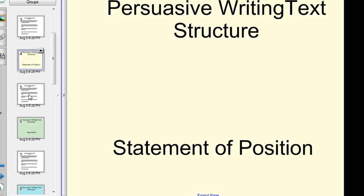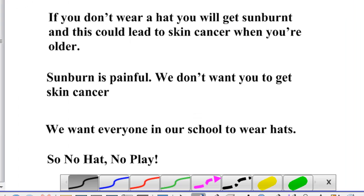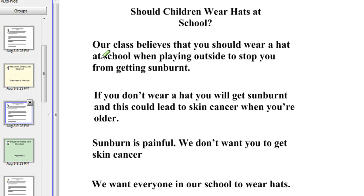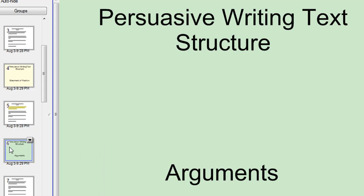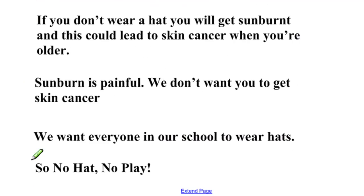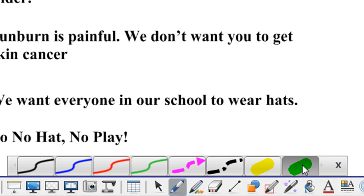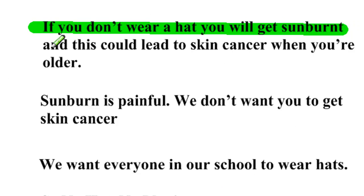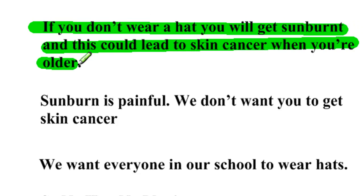Then you can start the process of identifying that aspect you're looking at. For the statement of position, on the next slide use your highlighter tool and highlight the statement of position. For arguments, go to the slide after that, grab your highlighter tool — you can choose a different color if you like — and start highlighting your arguments. As I said, you can do this yourself or you can discuss it with your students and get one of them to come up and use the highlighter tool to identify that aspect. That's basically it — I hope that explains it well and I hope you and your students benefit from it. Thank you.